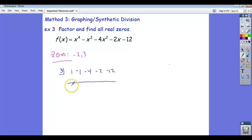And I get one. And I know this has to be a zero because three is a zero. So this goes to three, two, six, two, six, four, twelve.